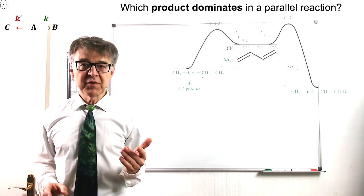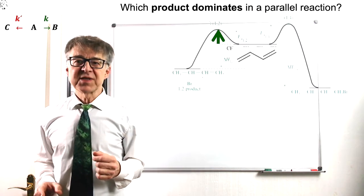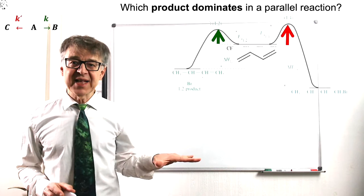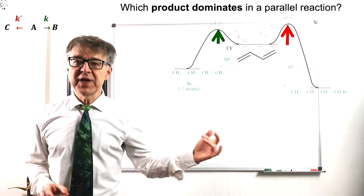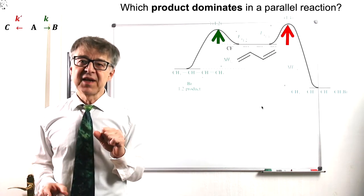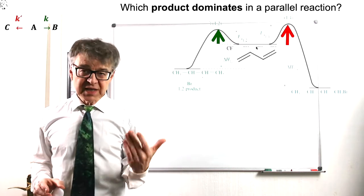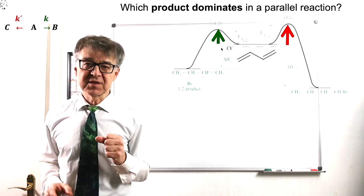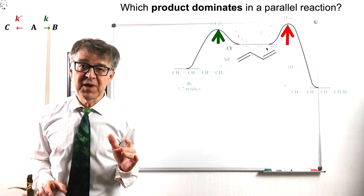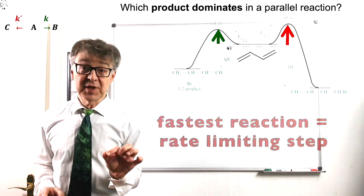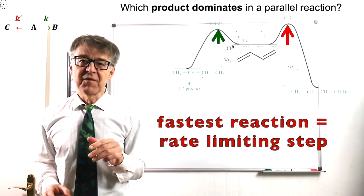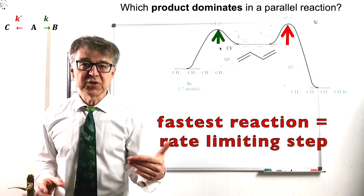In the reaction profile of a parallel reaction, we see the reactant in the middle and, starting from this, two reaction coordinates to the right and to the left that lead to the products. If the activation energies and thus the rate constants differ very much in a parallel reaction, the fastest reaction determines the kinetics of the overall process. This is the rate-determining step.